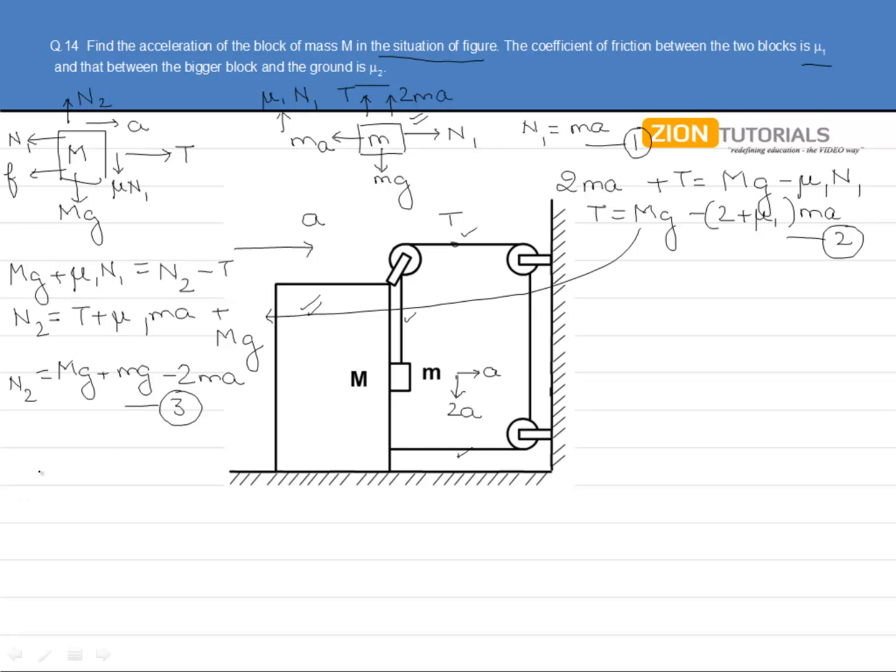From these free body diagrams, we can also say that T plus T minus N1 minus MA minus μ2 N2 equals zero. That is, 2T equals 2mg minus 2(2 + μ1)mA, giving us